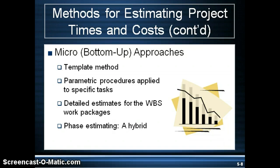Phase estimating is used when there is uncertainty around the final product. In this case, a macro or top-down estimate is done to justify the project and understand funding needs. The estimates are done in phases so that as the project details become more certain, they can complete the estimate for each phase.